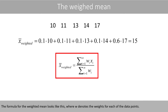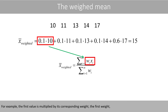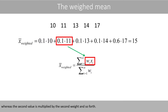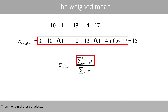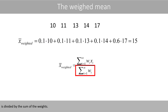The formula for the weighted mean looks like this, where w denotes the weights for each of the data points. For example, the first value is multiplied by its corresponding weight, the first weight, whereas the second value is multiplied by the second weight, and so forth. Then the sum of these products is divided by the sum of the weights.